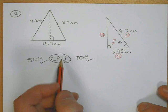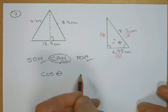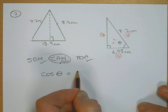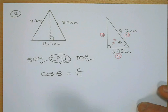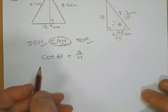Right, so we're using the cosine ratio. So cos θ equals the adjacent over the hypotenuse. We'll come onto inverse cos in a minute.